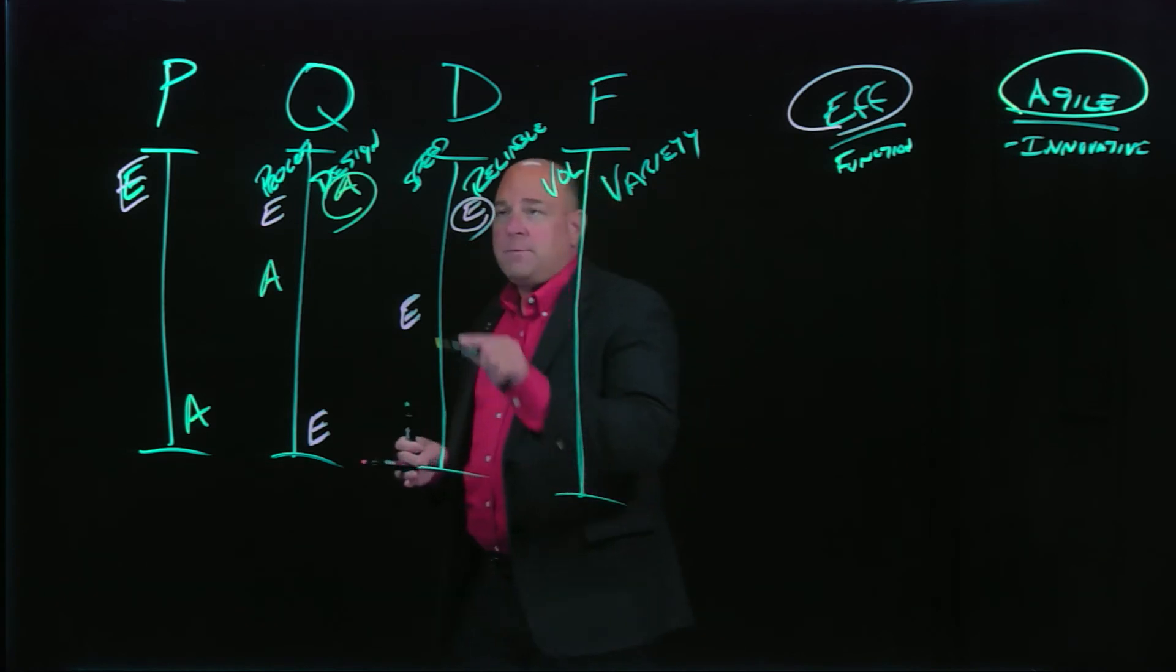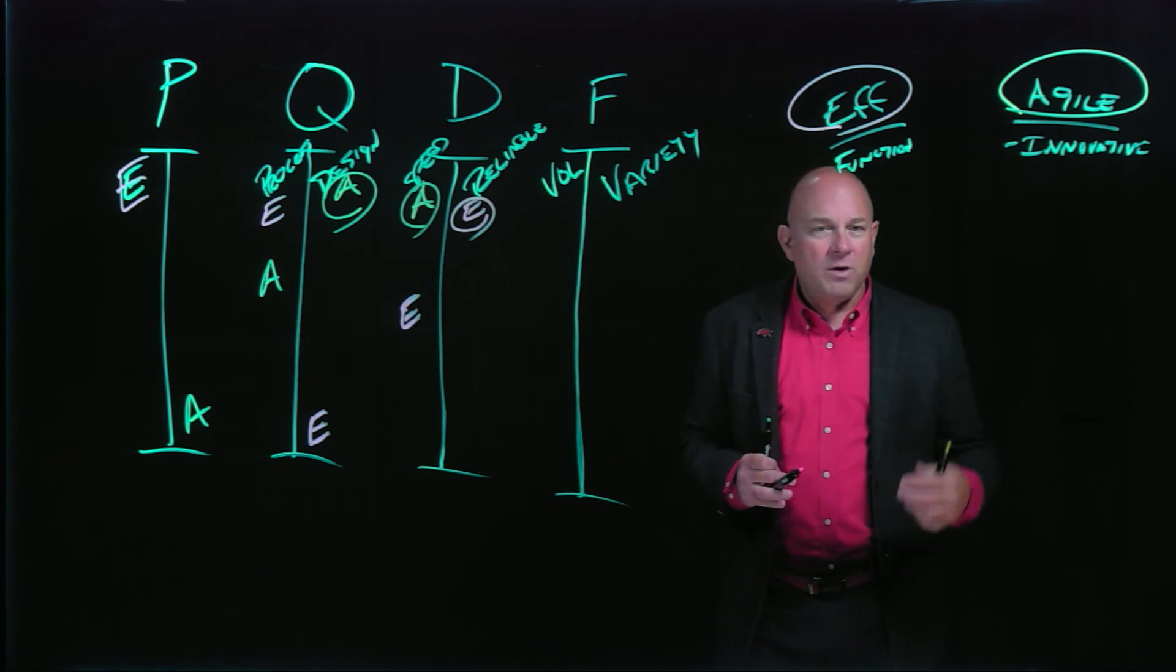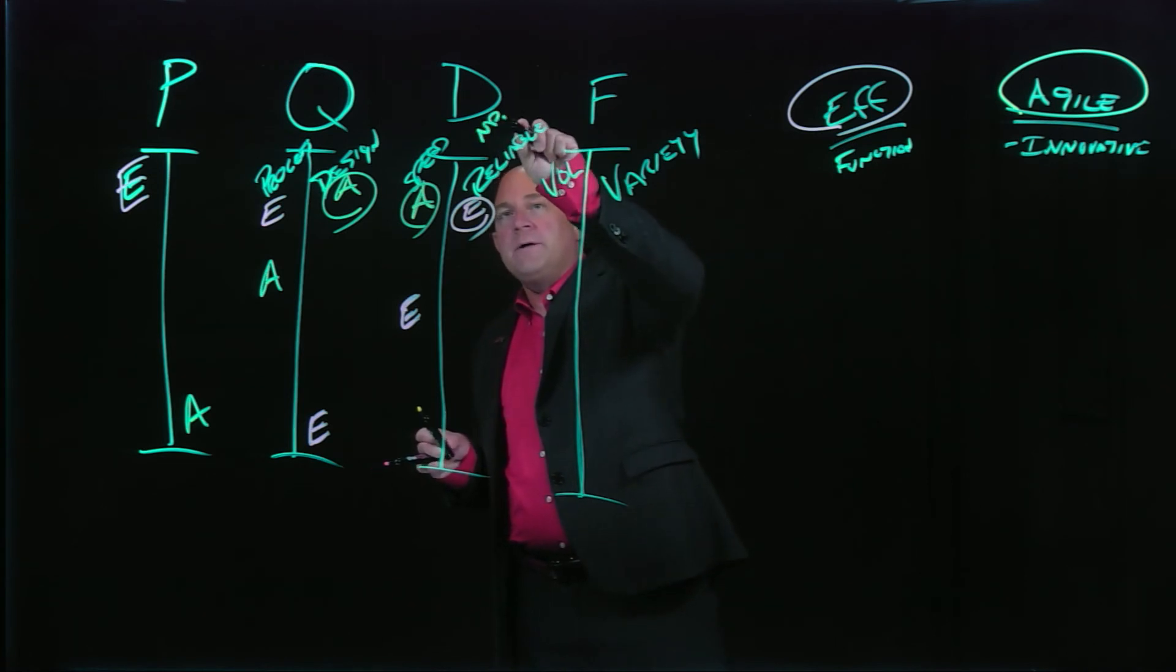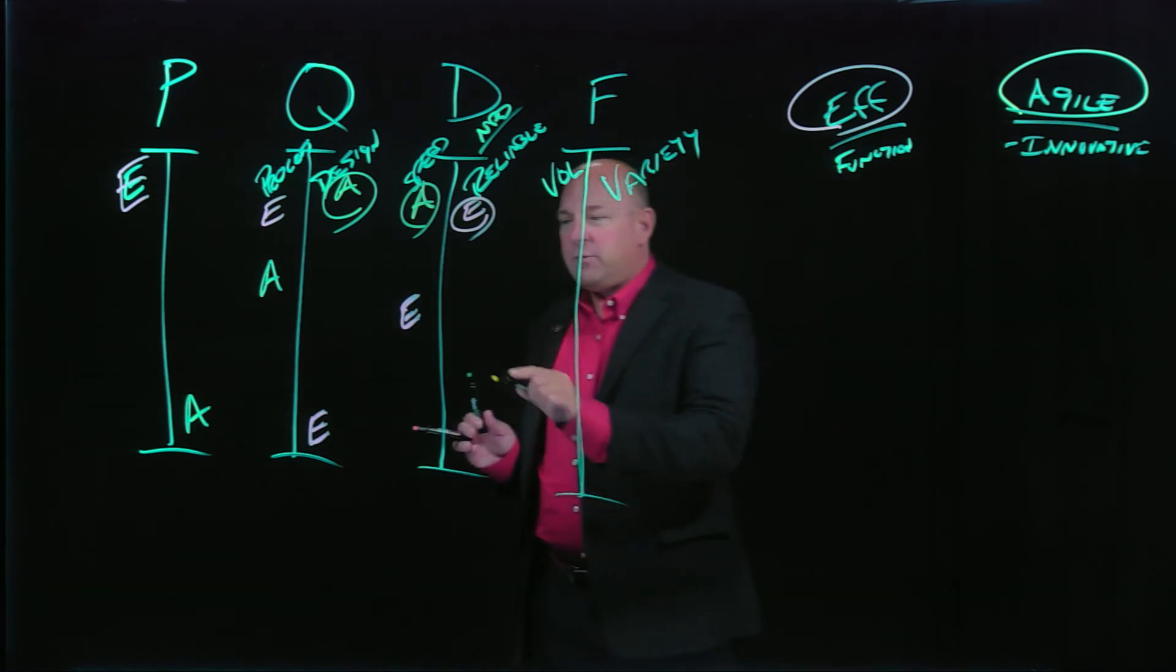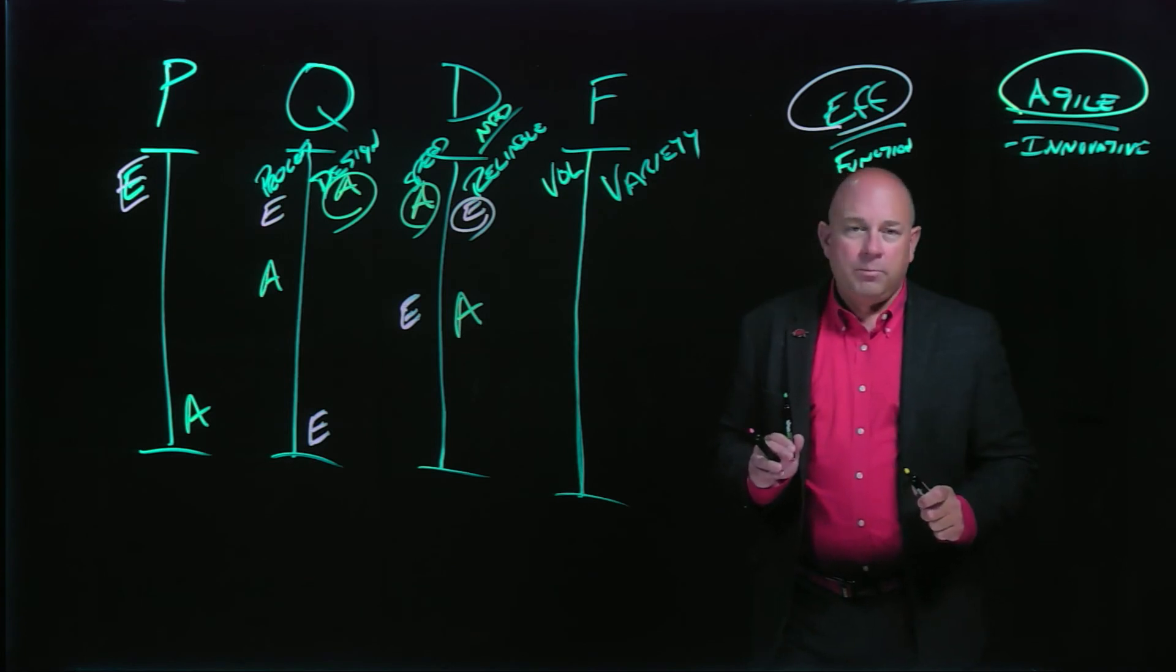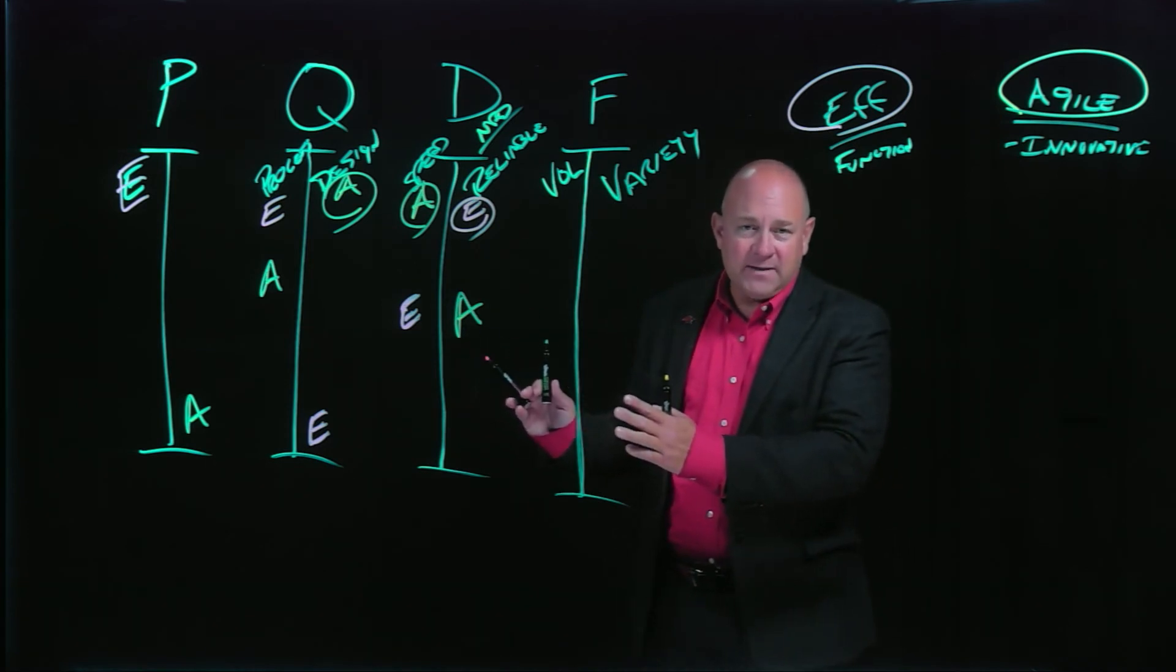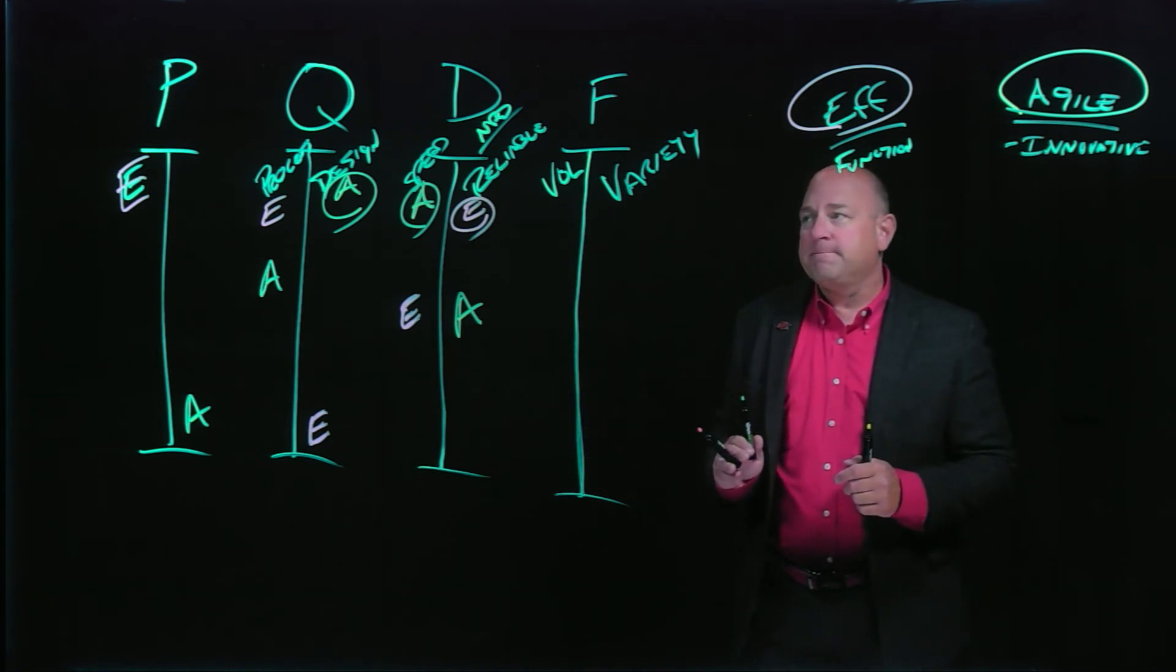But to an agile company, oh, speed is everything. Speed is absolutely everything. We want to be responsive to our customers. We want to have, even from the perspective of new product development, we're very interested in speed to the point that we will actually sacrifice some reliability. Why? Because think about it, an innovative company with high contribution margins per unit has high customer loyalty, doesn't compete based on price. My customer, if I have a stock out, might just wait for my product.